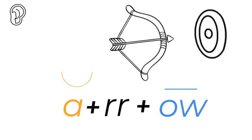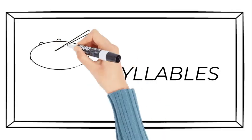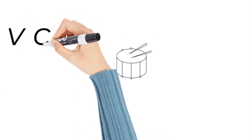Arrow. How do we break arrow up into syllables, into parts? Let's see.